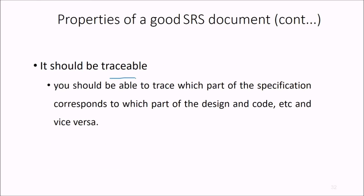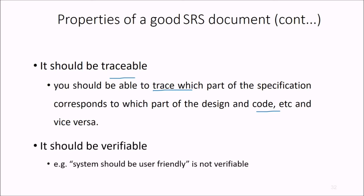Then traceable. You should be able to trace which part of the specification correspond to which part of the upcoming stages, that means design and code, et cetera, and likewise vice versa. And verifiable, that means system should be user friendly. This is not verifiable. How can you verify that it is user friendly? So every content should be verifiable.